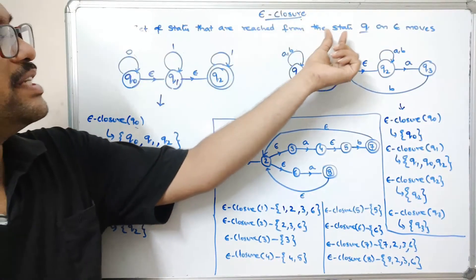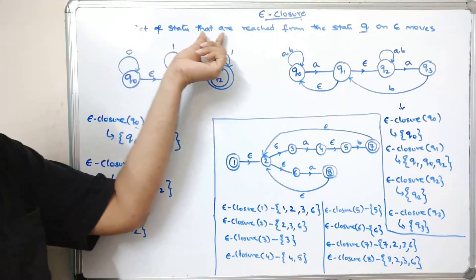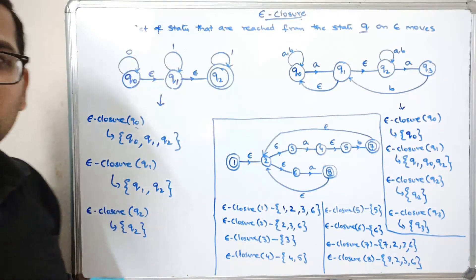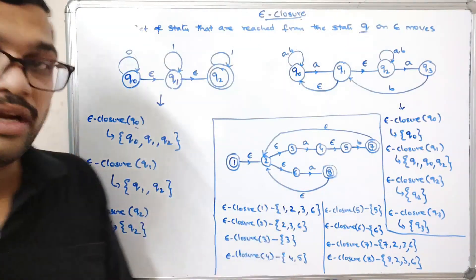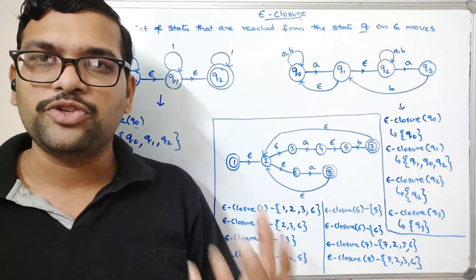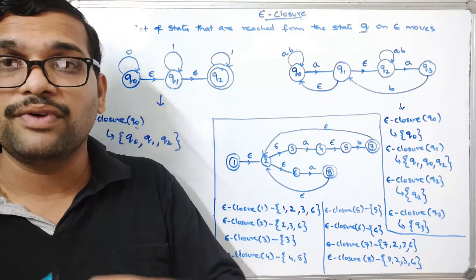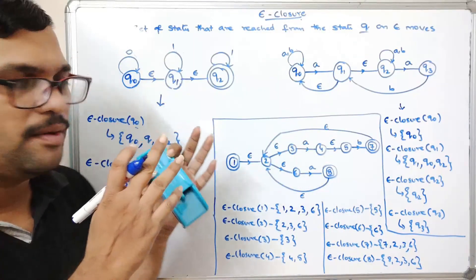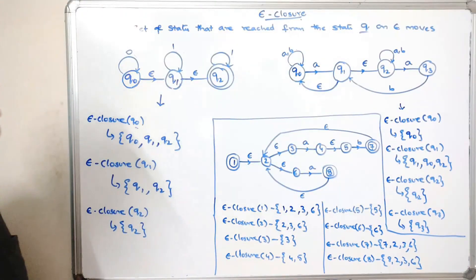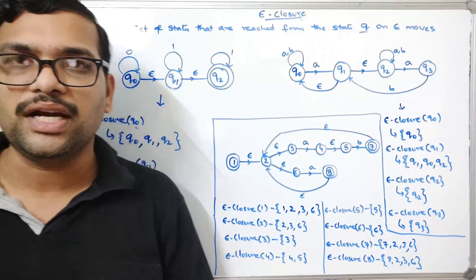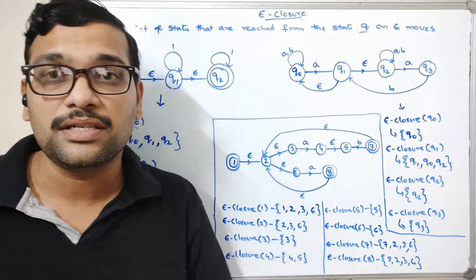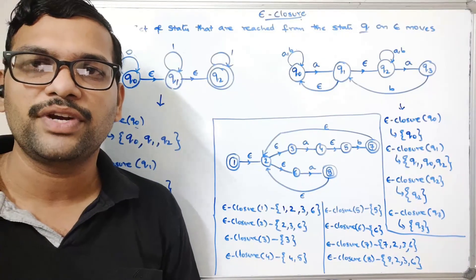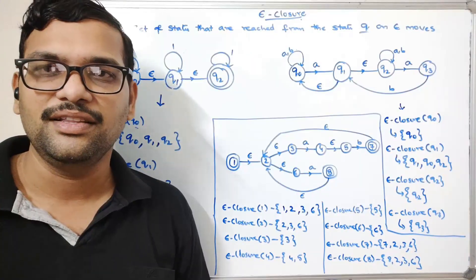To summarize: epsilon closure for a state q is a set of states that are reachable from state q on epsilon moves. We have seen three examples of how to calculate epsilon closure. This will be used in the conversion of NFA with epsilon to NFA without epsilon, and then to DFA for practical implementation. If you have any doubts, post them in the comment section. Like, share, and subscribe to our channel. Thank you very much.